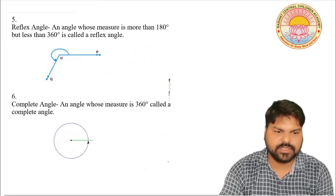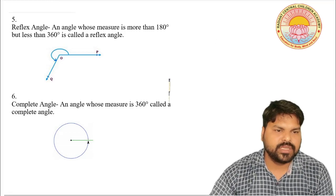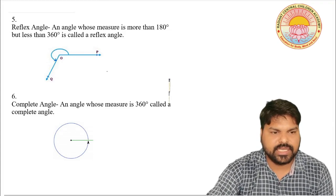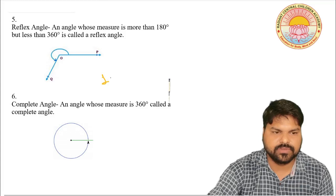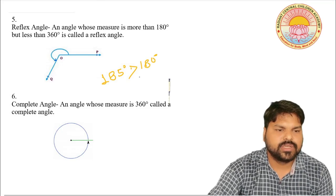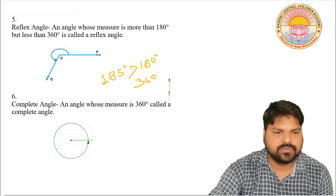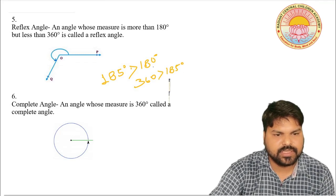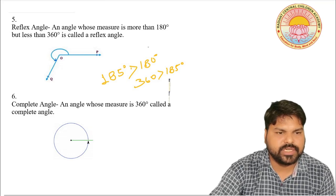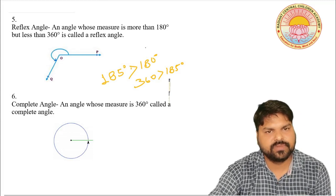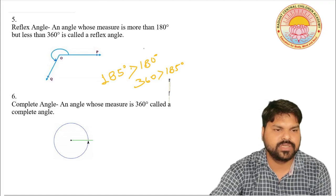Now we discuss the reflex angle. What is a reflex angle? An angle whose measure is more than 180 degrees but less than 360 degrees is known as a reflex angle. For example, 185 degrees is greater than 180 and less than 360, so it is a reflex angle.